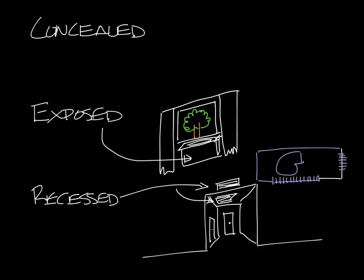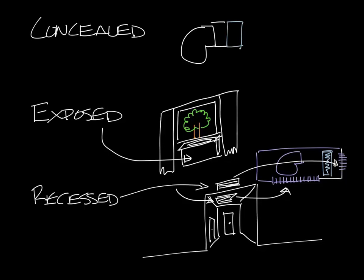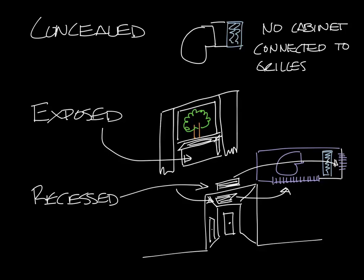It has a blower and a water coil, pulling air from the hallway and blowing it out the grill into the space. The grill in the ceiling of that little hallway and the grill blowing into the space are both part of the fan coil. A concealed fan coil is installed completely behind the wall or ceiling — it's usually just the blower and the water coil with no cabinet, connected to a grill that is visible in the space.